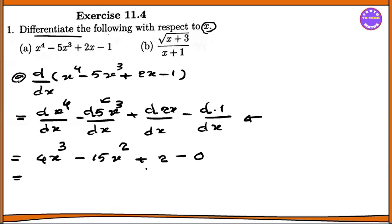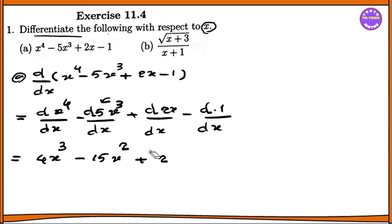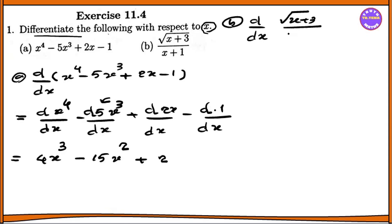Now if you have 0, you can see the formula. So this is the formula of the formula. This is d by dx.